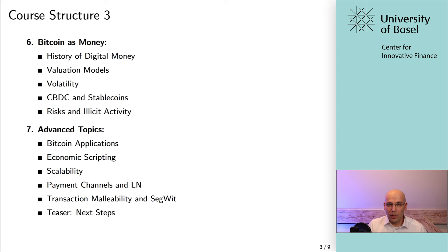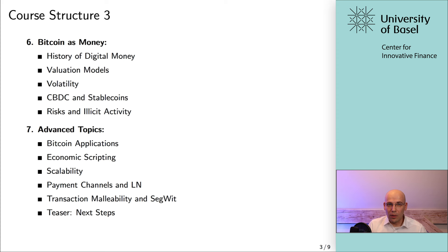In section six we look into the history of digital money. We talk about Bitcoin valuation models, volatility, the risk of illicit activity, and we will also briefly touch on CBDC — that is, central bank digital currency — as well as stablecoins.